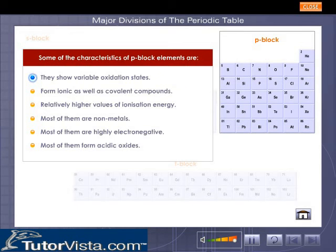Some of the characteristics of P-Block Elements are: They show variable oxidation states, form ionic as well as covalent bonds, relatively higher values of ionization energy. Most of them are non-metals. Most of them are highly electronegative. Most of them form acidic oxides.